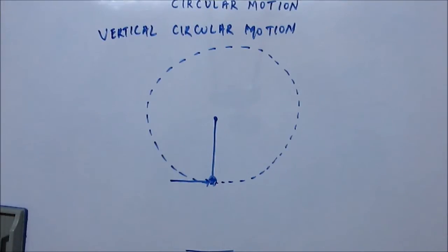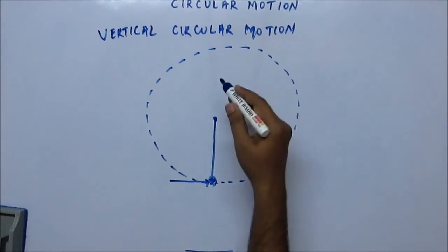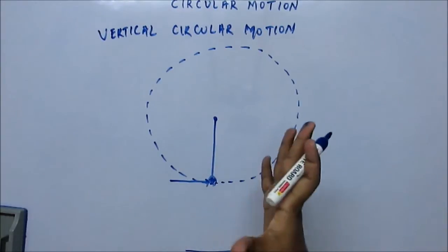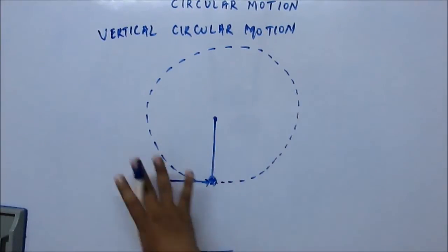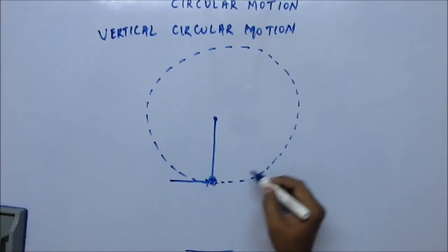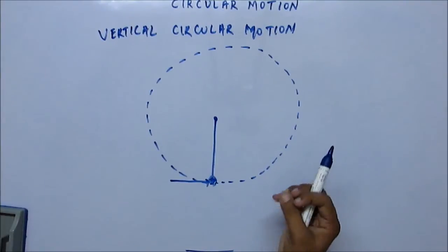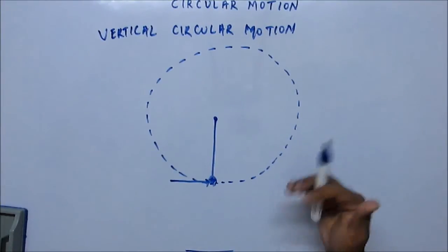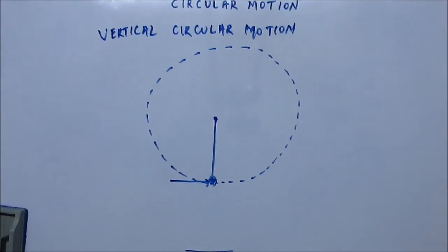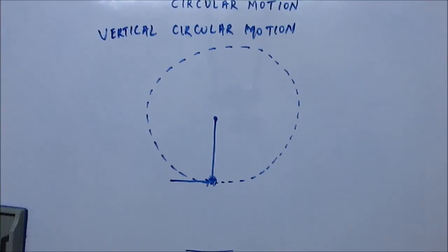The answer is that it will be non-uniform circular motion, because the velocity will keep on decreasing. The bob is going up, gaining potential energy. It is in the vertical plane, not a horizontal plane, so total energy is conserved. Kinetic energy keeps decreasing, meaning the speed keeps decreasing. If the speed is changing, then it is not uniform circular motion.